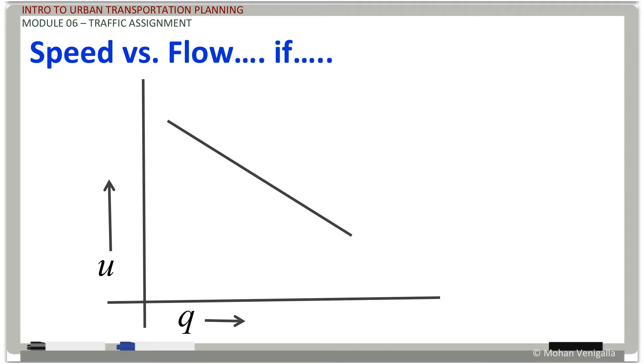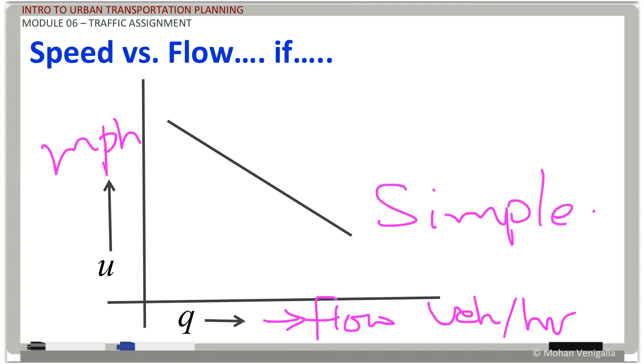So what is the speed versus flow relationship? This is the flow. If you've forgotten, q represents flow, which is vehicles per hour, and u being the speed. Let's say miles per hour.